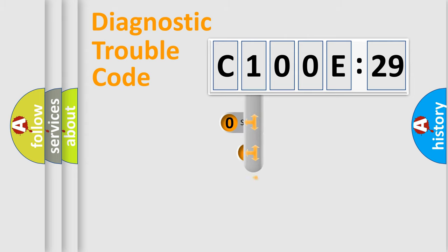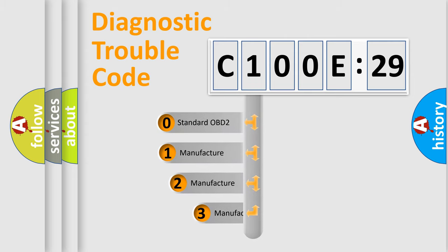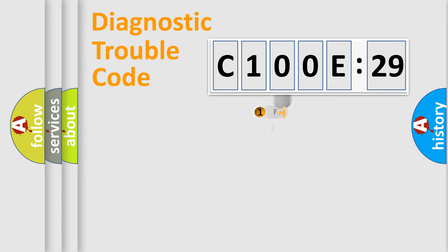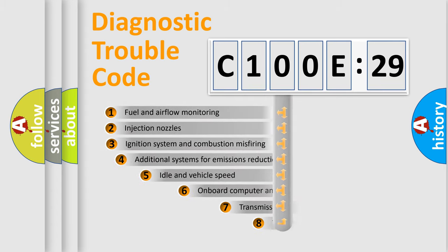This distribution is defined in the first character code. If the second character is expressed as zero, it is a standardized error. In the case of numbers 1, 2, 3, it is a manufacturer-specific error.